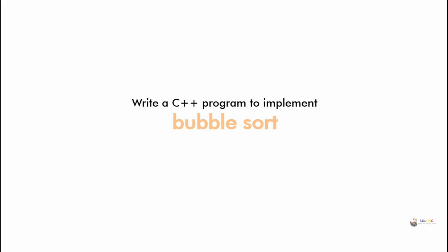Likewise, during each pass, we will find out the highest element and that will be shifted ahead to become part of the sorted array. So if there are 5 number of elements that need to be sorted, then we have to perform 4 number of passes.